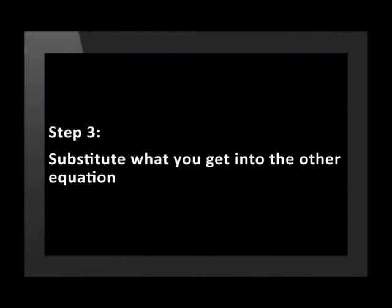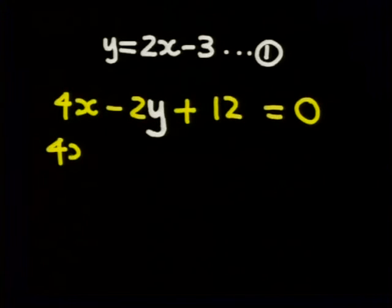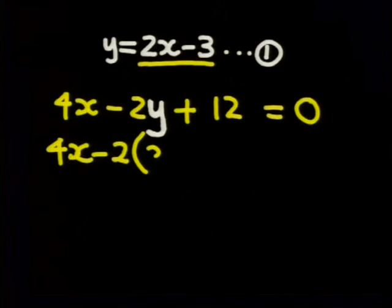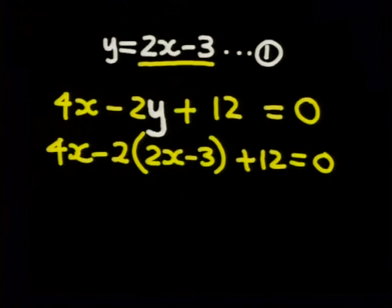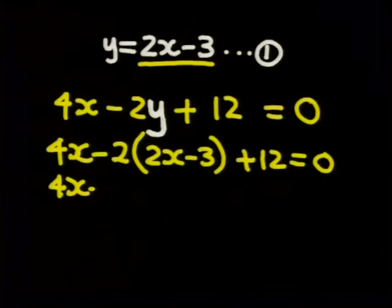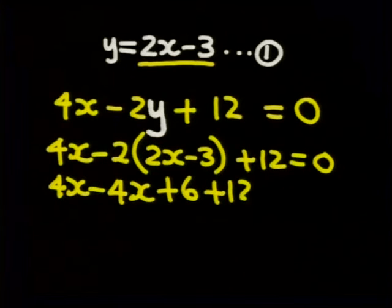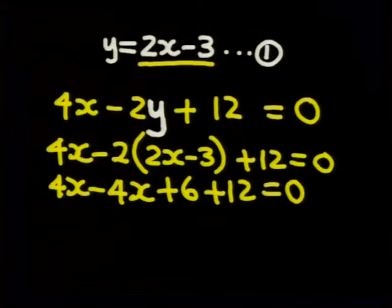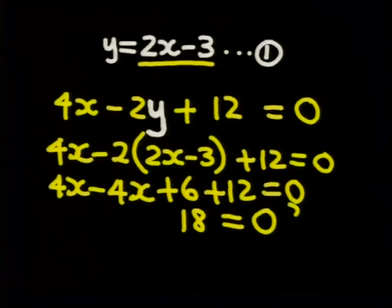Now comes step 3, where I substitute y equals 2x minus 3 into the second equation. So substituting for y, we get 4x minus 2 multiplied by (2x minus 3) plus 12 equals 0. Now if we multiply out the brackets, we get 4x minus 4x plus 6 plus 12 equals 0. And if we add and subtract like terms, we get 4x minus 4x cancels out. 6 plus 12 is 18 equals 0.